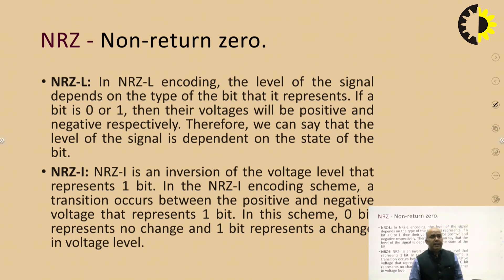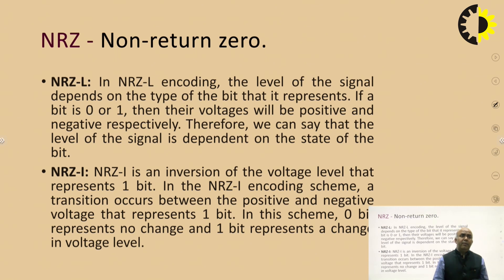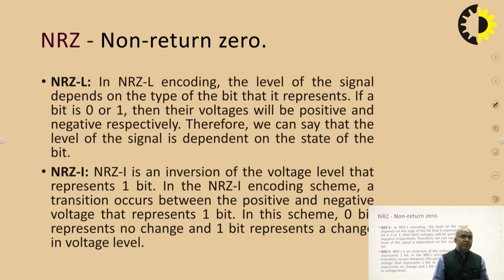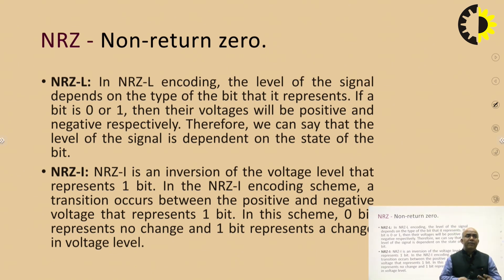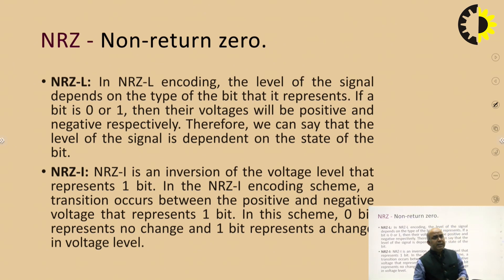As the name suggests, NRZ stands for Non Return to Zero. In NRZ encoding, the level of signal depends on the type of bit being sent from sender to receiver. Either they are represented in the form of bits 0 and 1, with voltage being positive and negative respectively. Therefore, the level of signal depends upon the state of the bits.